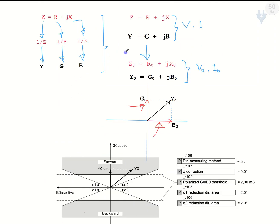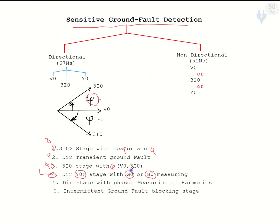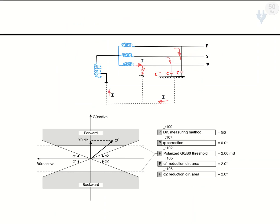Today, we are going to discuss which measuring method we should use for direction determination and for our pick-up — whether to use the susceptance part or the conductance part of the zero-sequence admittance.